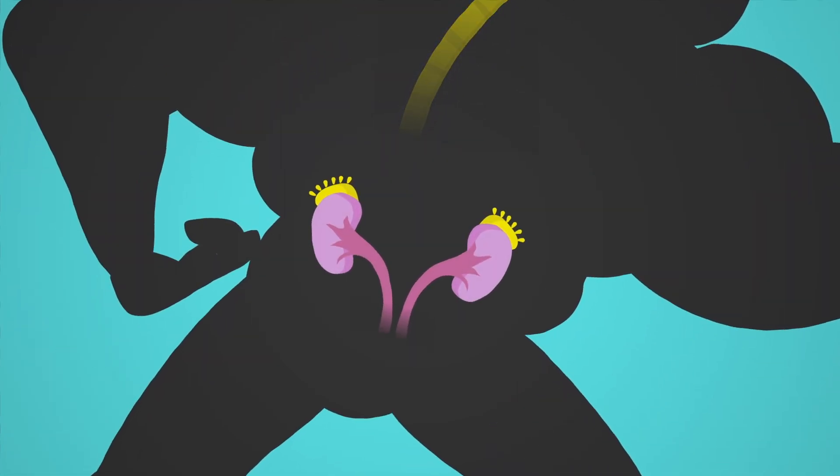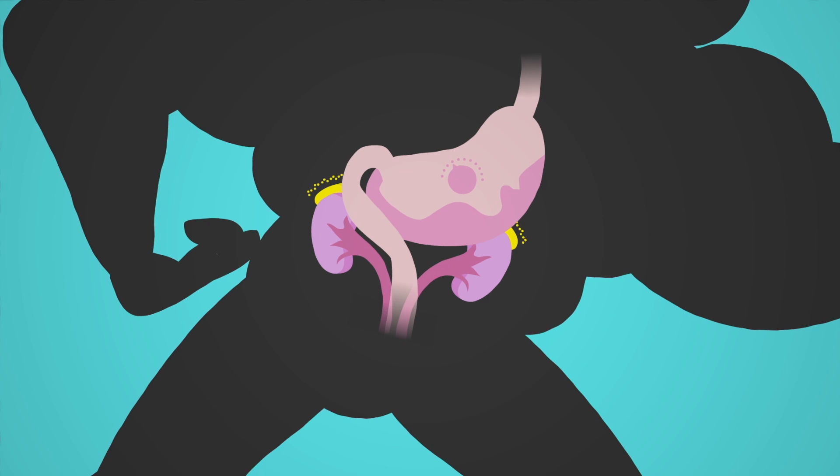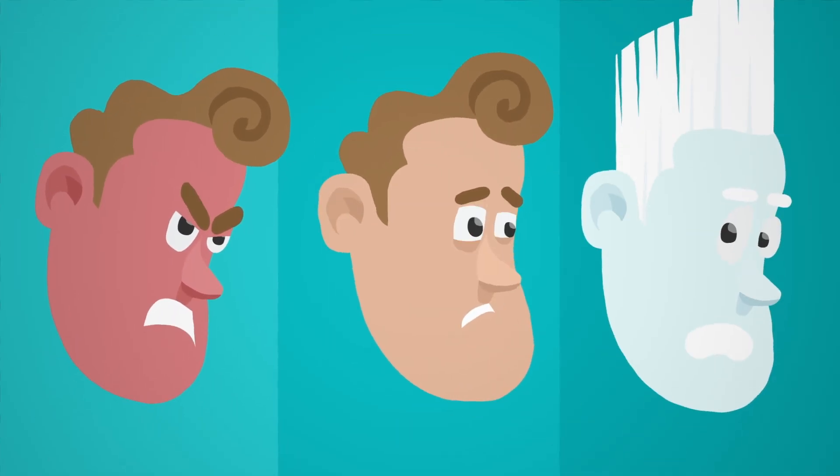The adrenal glands produce cortisol and release some constantly, but when they receive the signal from the pituitary gland, they release a burst of cortisol, which spurs the body to generate more glucose for energy, decrease functions not immediately related to survival, like digestion, and can activate a fight, flight, or freeze response.